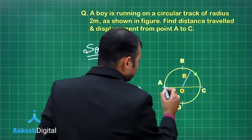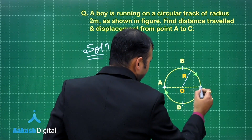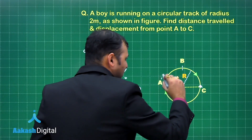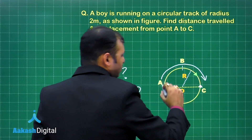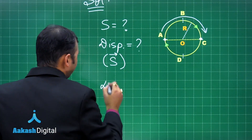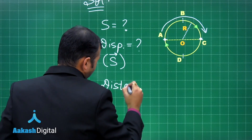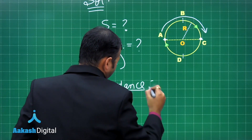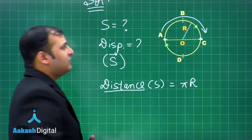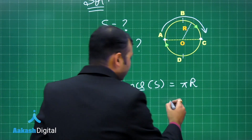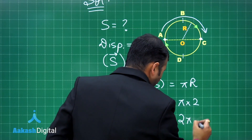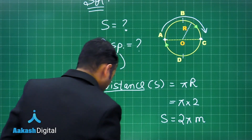From A to C, the object moves along a semicircular path. The distance is the arc length, which equals πr = π × 2 meters = 2π meters.